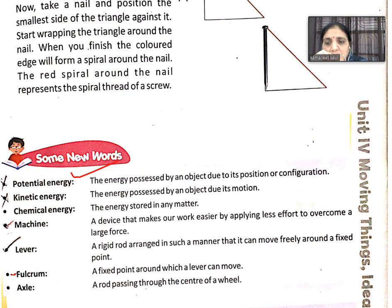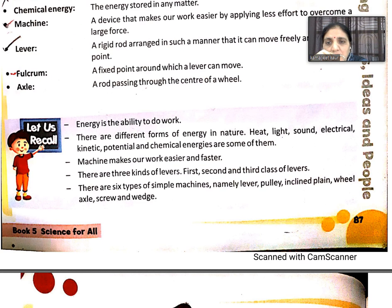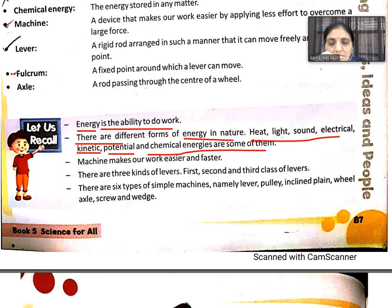These are the new words — learn them. What we read: energy is the ability to do work. There are different forms of energy — heat, light, sound, electrical, kinetic, potential, and chemical energies. Machines make our work easier and faster. There are three kinds of levers: first, second, and third class. There are six types of simple machines: lever, pulley, inclined plane, wheel and axle, screw, and wedge.